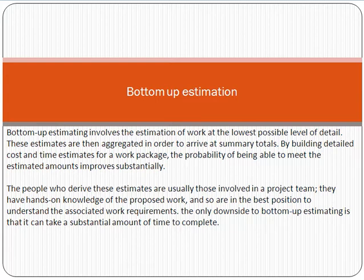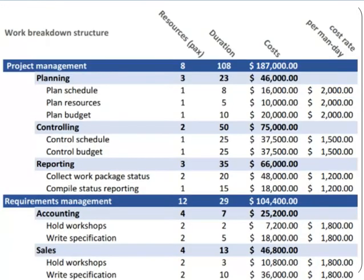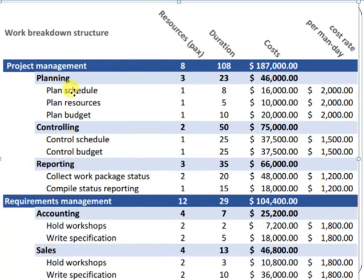Let me give you an example. Suppose you are managing a project. In that project you have to do planning, then controlling, and then reporting. Under planning there are three tasks: plan schedule, plan resource, and plan budget.